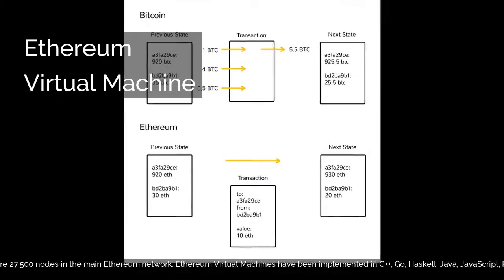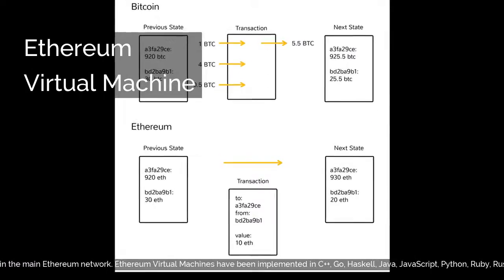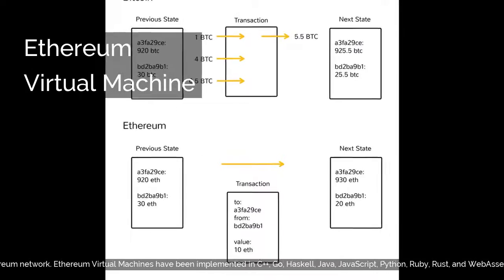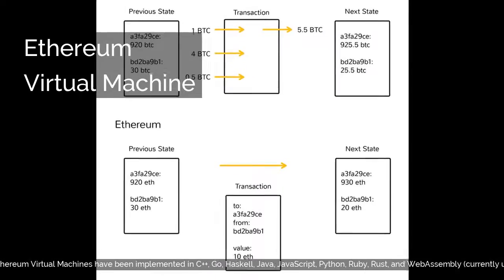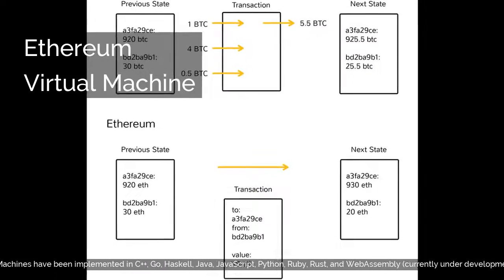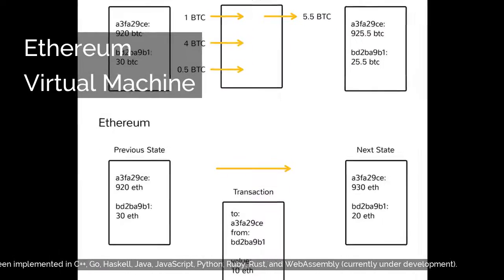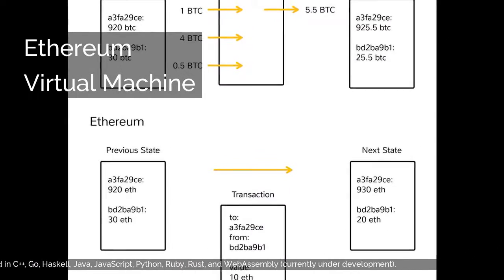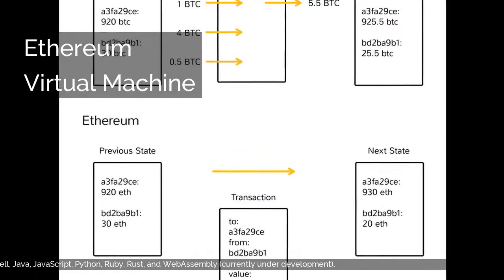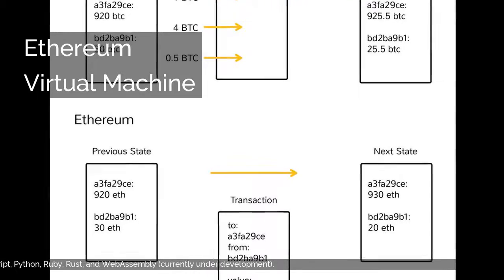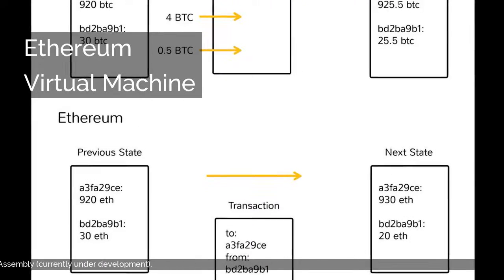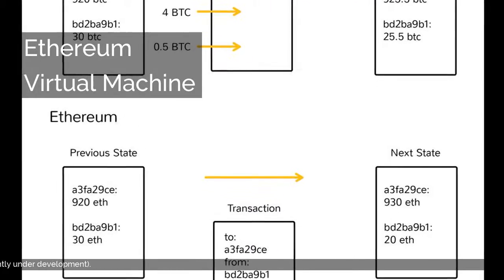Ethereum Virtual Machines have been implemented in C++, Go, Haskell, Java, JavaScript, Python, Ruby, Rust, and WebAssembly, currently under development.